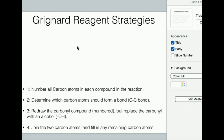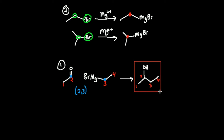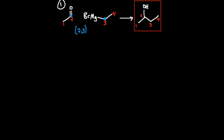Step three: redraw the carbonyl compound but replace the carbonyl with an alcohol. So I'm going to redraw this compound on the left, but replace that carbonyl with an OH — an alcohol. This is carbons one and two. I know carbons two and three need to form a bond, so I'm going to connect carbon two to carbon three, and then that's connected to four. And that is the product of this particular Grignard reaction.